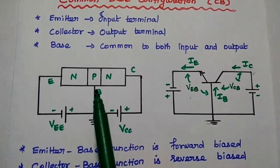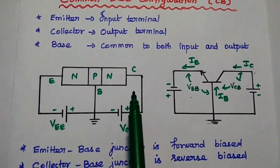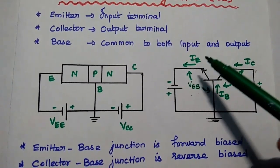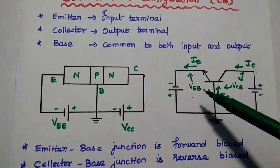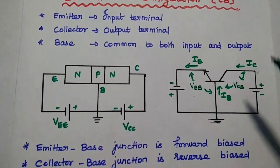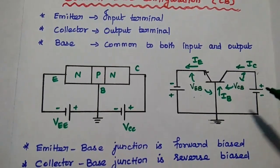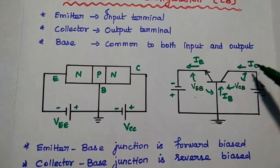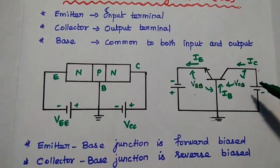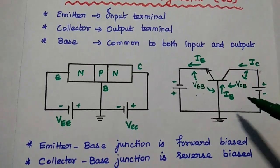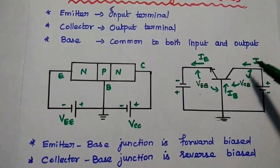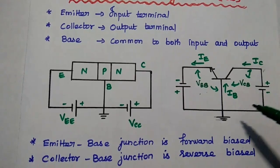Here the base is common to both input and output. In this diagram, the emitter current represents the input current, emitter-base voltage is the input voltage, collector-base voltage is the output voltage, and IC that is collector current is the output current. Here IB represents the base current which is negligibly small when compared to the collector current.